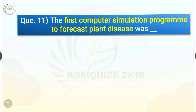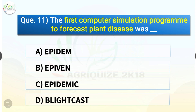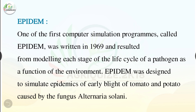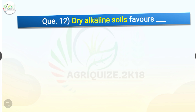Question number eleven: The first computer simulation program to forecast plant disease was dash. The options are EPIDEM, EPIWEN, EPIDEMIC, or BLASTCAST. The correct answer is option A, EPIDEM. One of the first computer simulation programs, called EPIDEM, was written in 1969 and resulted from modeling each stage of the life cycle of a pathogen as a function of the environment. EPIDEM was designed to simulate epidemics of early blight of tomato and potato caused by the fungus Alternaria solani.